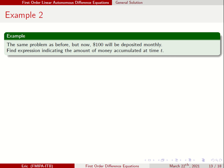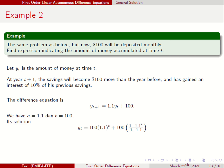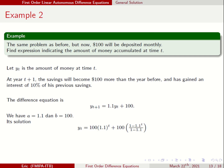Another problem: every year you deposit an additional $100, so at year t+1 the saving becomes $100 more than the year before and has gained interest of 10% on previous savings. The difference equation includes an additional 100 each year, so a = 1.1, b = 100, and y0 = 100. Plugging into the formula gives the accumulated amount, and for 7 years you substitute t = 7.